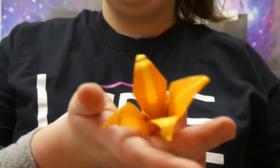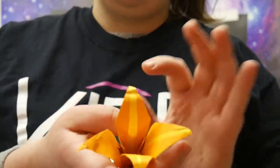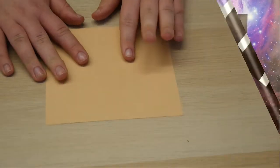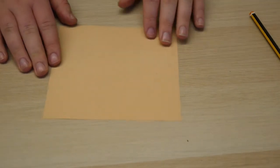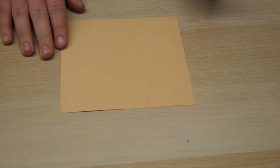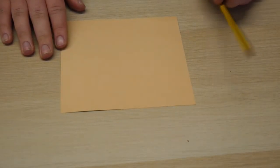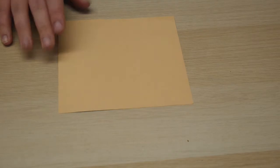So this next one guys is a lily. These ones are the most difficult but they're so so beautiful, and so let's get started. Okay guys, so we have a square piece of paper to make this. I've also got a pencil so later we can make our petals on our lily.